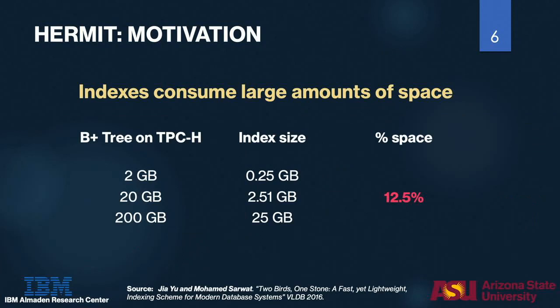Indexes consume lots of space. Based on a recent paper published in VLDB 2016, building a secondary B-tree index on a TPC-H table can consume around 13 percent additional storage overhead. Remember, this is just for one single secondary index — you may have several secondary indexes on the same table. This benchmark tests up to 200 GB TPC-H line item table.